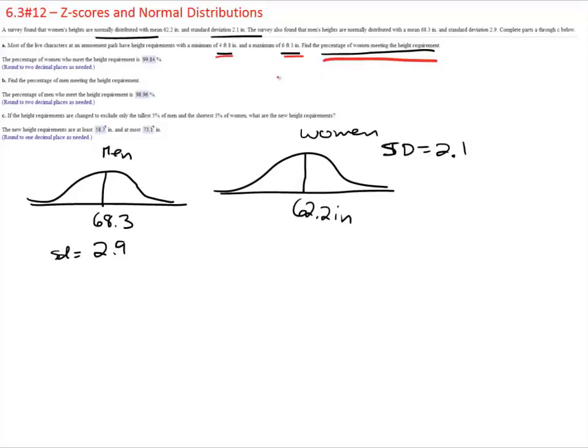The first thing we have to do is put them in the right measurement. Instead of 4 feet 8 inches we have to make them all inches. So 4 feet of course is 48 plus 8, so that's 56, and then 6 foot 3, well 6 is 72 inches plus 3 equals 75. So they're asking for what percentage of women are between 56 and 75. We're looking for all of that.